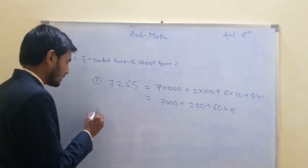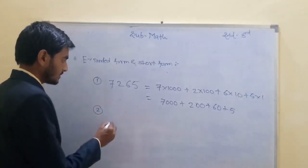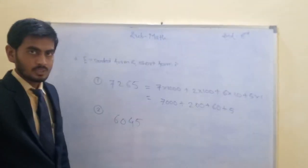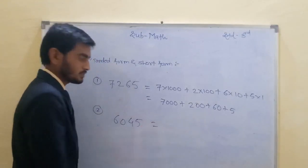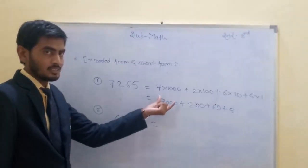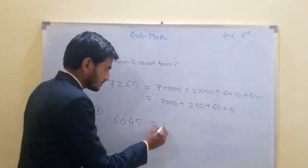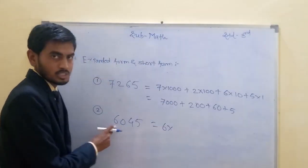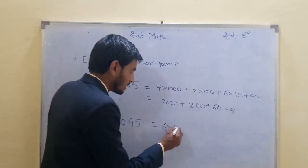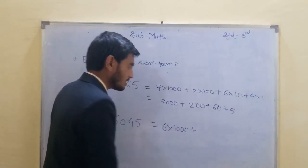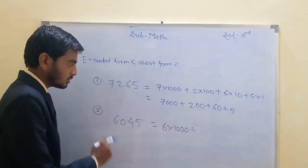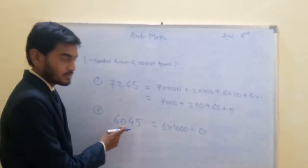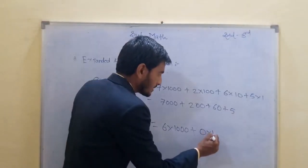Take one more example: 6,045. Solve it the same way. First digit is 6. On which place? 1's, 10's, 100's, and 1000's. Means 6 multiplied by 1000. Plus next digit is 0. On which place? 100's place. Means 0 multiplied by 100.